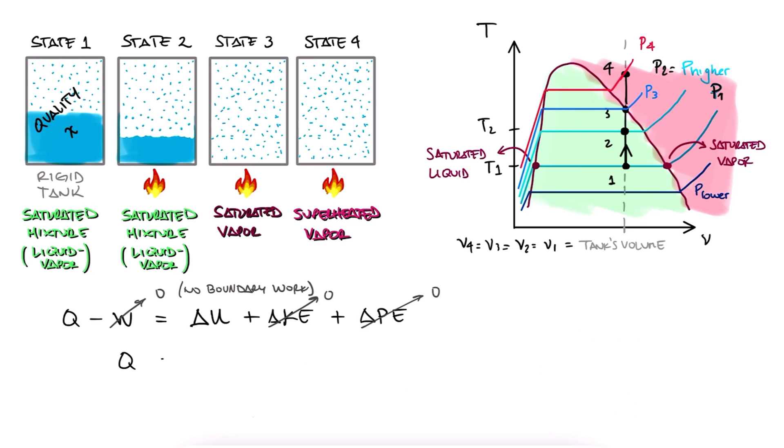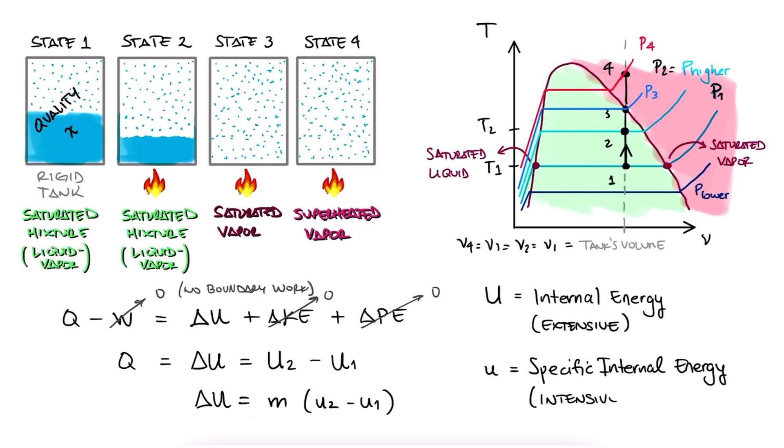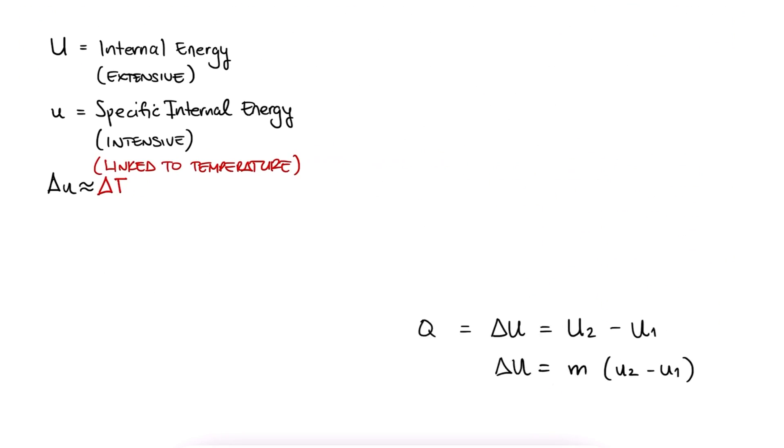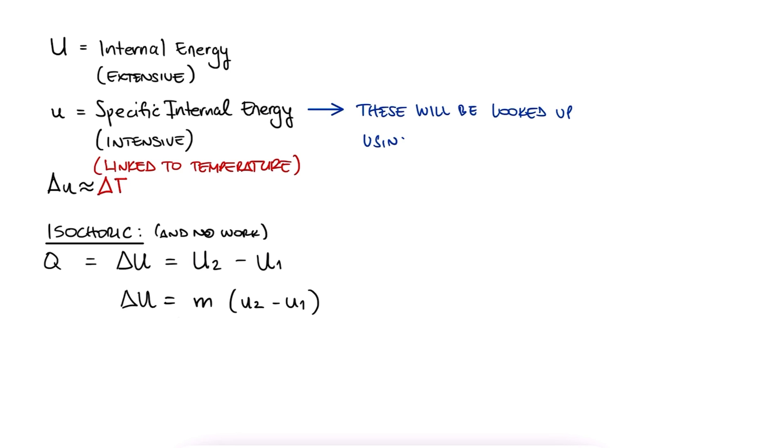But what is really happening is that delta U is mc delta T. More on this later when we cover specific heats. For now, this change in internal energy can be written as capital U2 minus U1 for whatever amount of mass we have, meaning this is an extensive property, or we can write the change in internal energy as lowercase u2 minus u1 times the mass. Lowercase u's would be intensive properties. We'll see that lowercase u is a property that depends on the temperature, so if the temperature changes, we can look up how much the specific internal energy u changes. So for now, we'll forget about that review of specific heat and just go to property tables to find specific internal energy values for a given temperature and pressure.